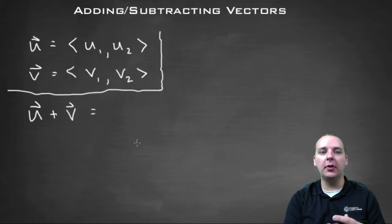So here let's talk about how we add and subtract vectors very briefly. So let's say we have one vector in component form, vector u, which is u1 comma u2, and another vector v, which is v1 comma v2.